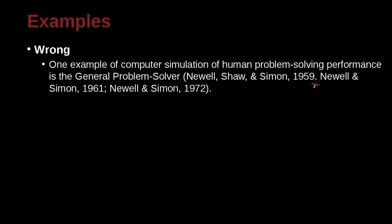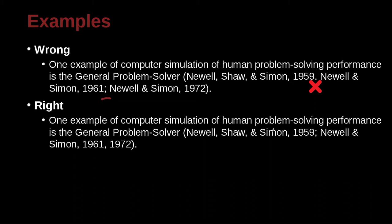Right away you can see there's a problem because here we're using a period and here a semicolon. Remember the correct way to combine different authors and different papers is to use the semicolon. And remember, if you have the same authors twice, you don't need to write their names — you just write the different dates of the paper separated by a comma.